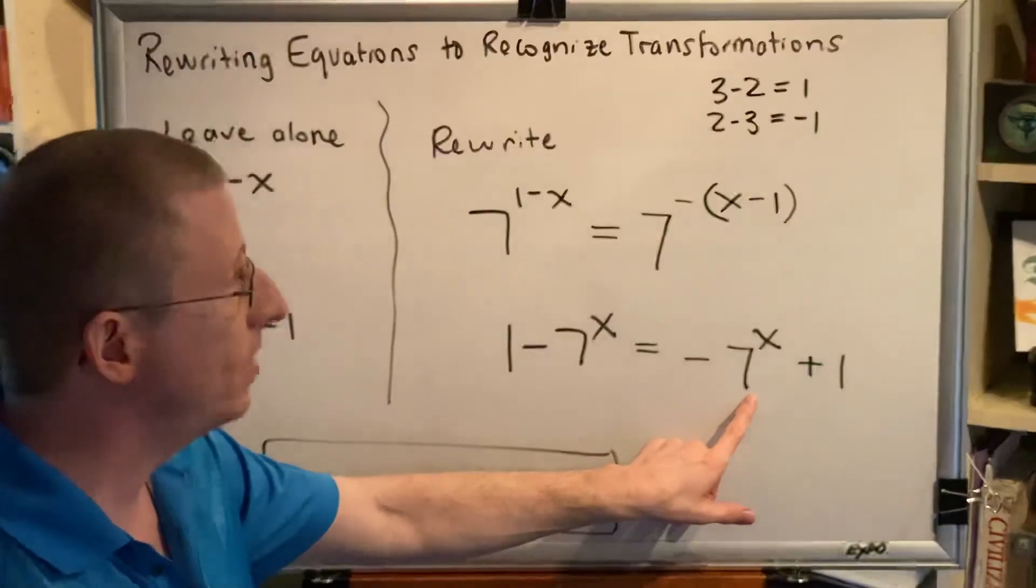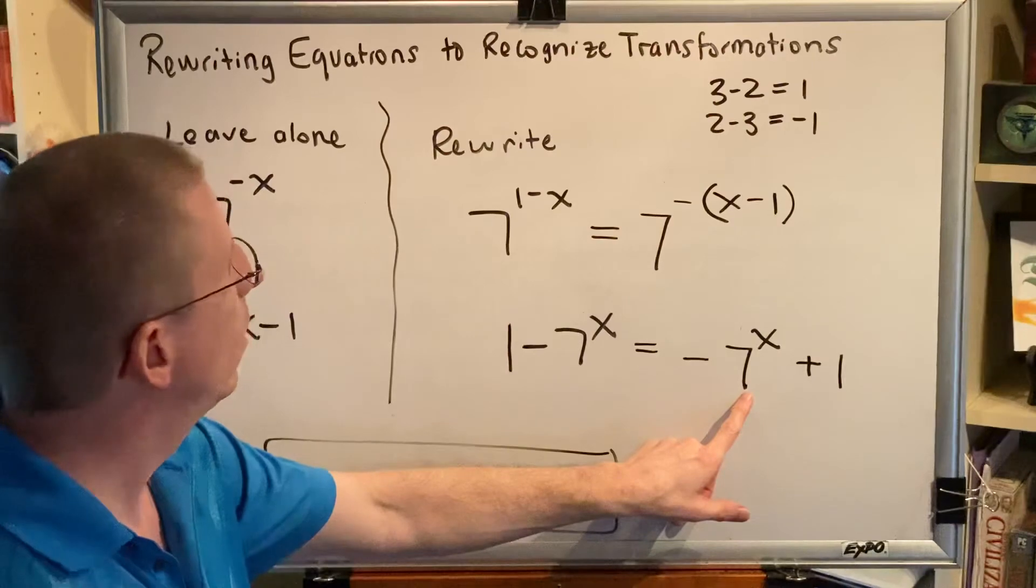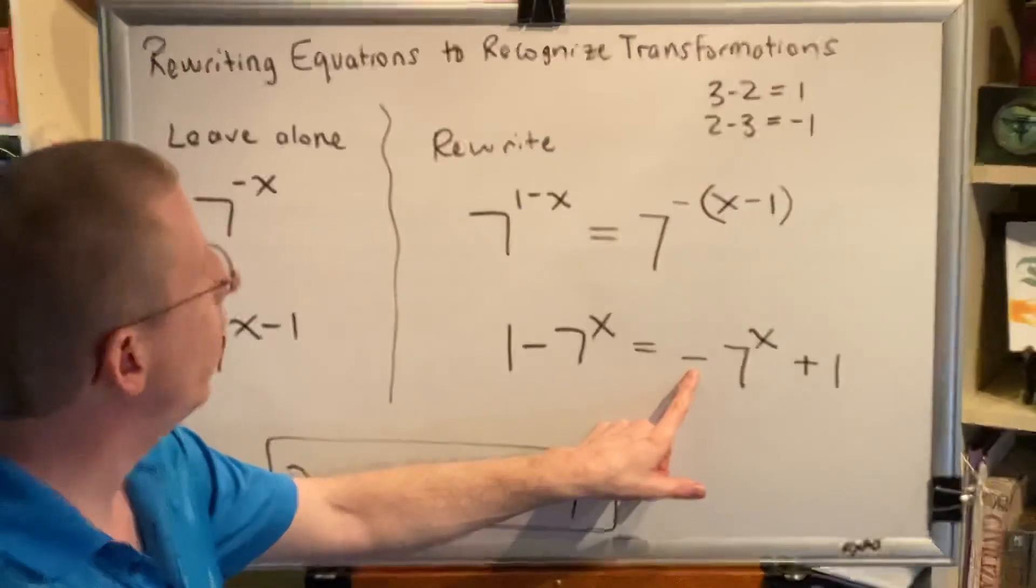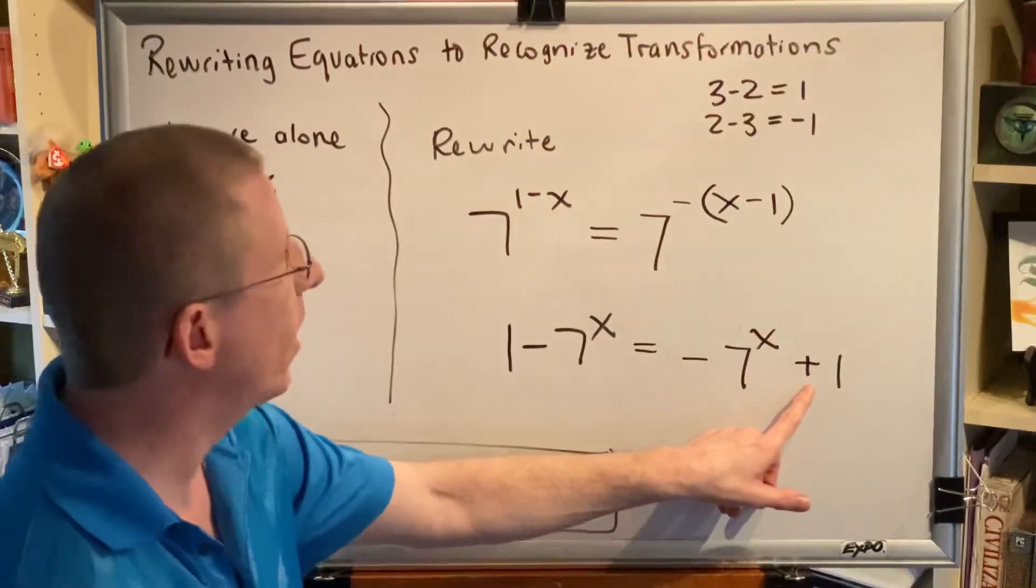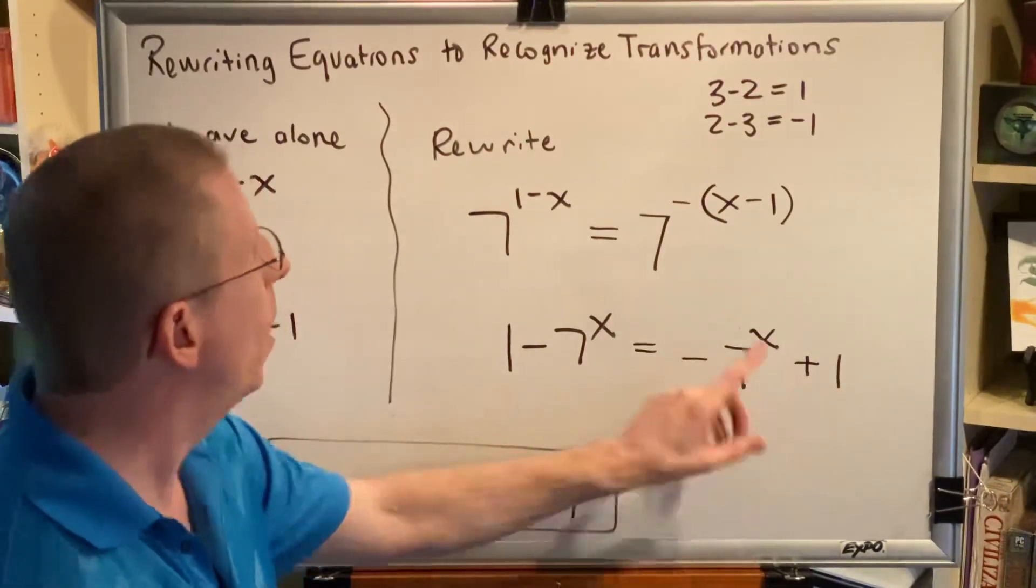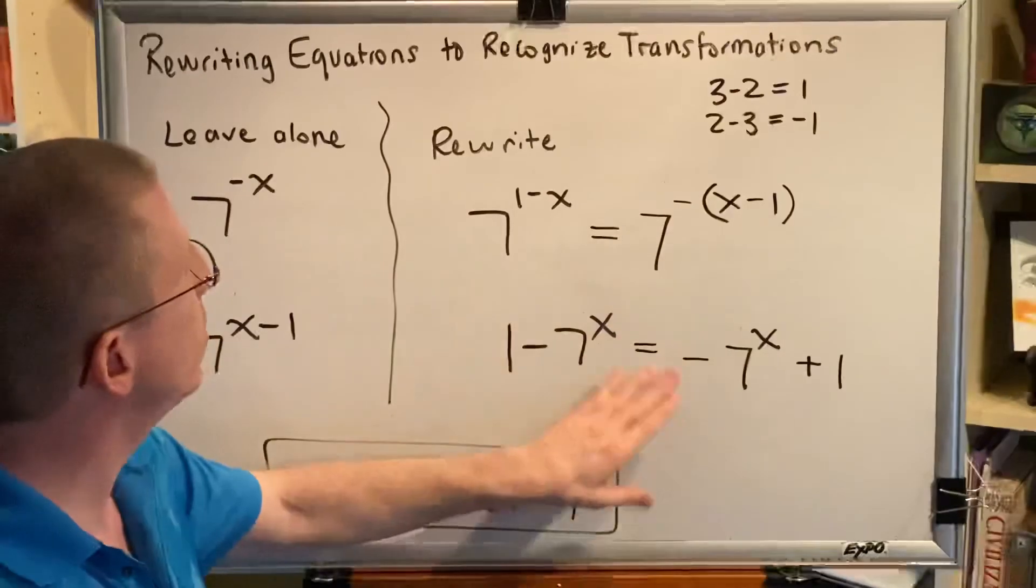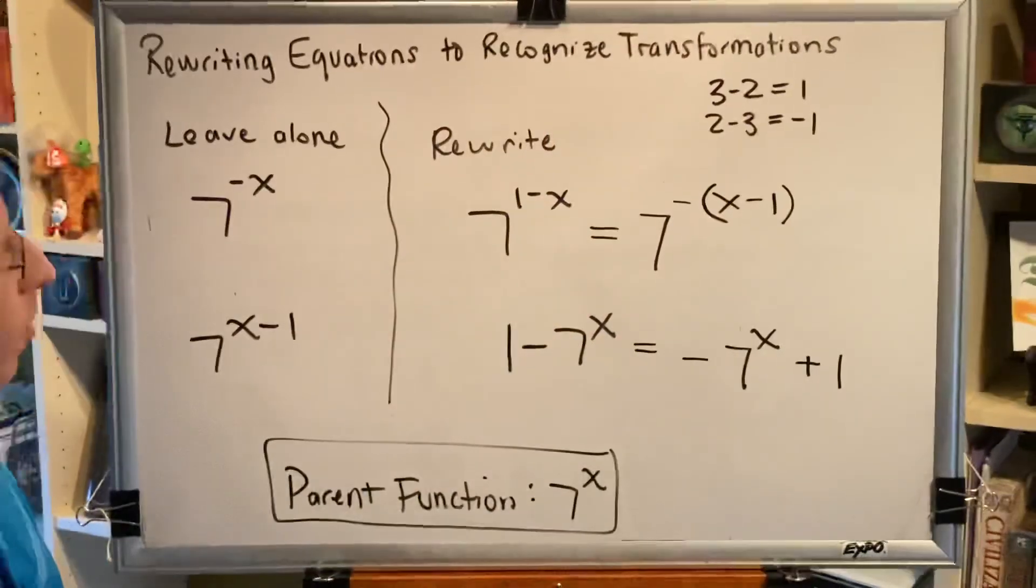By the way, the base here is 7, not negative 7. This multiplication by negative 1 is indicative of a vertical reflection, and this add 1 outside far from x is indicative of a vertical shift up. By rewriting these, we are able to see which transformations have been applied to our problem.